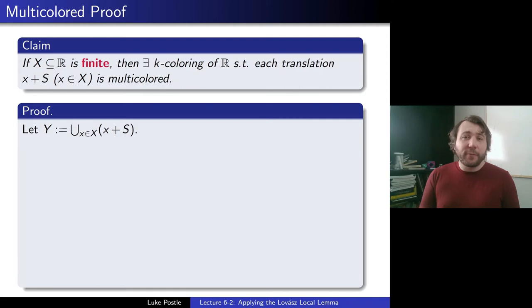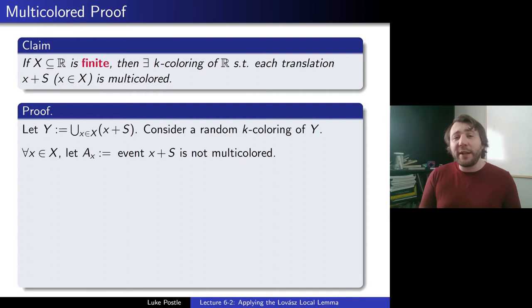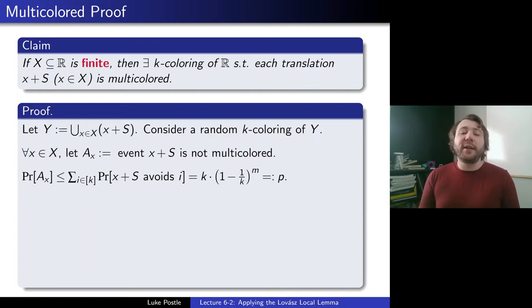So if we only look at a finite number of translations, we claim we can do this. The proof will use the Local Lemma. We let Y be all of the numbers that appear in these translations — take the union of all these translations — and consider a random k-coloring of Y. We want to avoid bad events. The bad event Ax will be the event that x + S is not multicolored. Then what's the probability of Ax? We upper bound it with the union bound: if it's not multicolored, it avoids one of the colors.